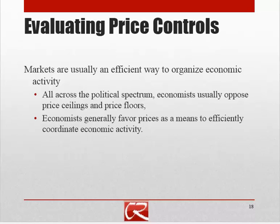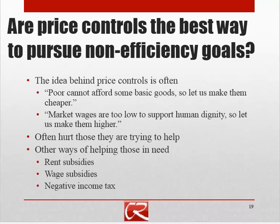Nearly every Econ 1 textbook has some big ideas or first principles in its first chapter. Paul Krugman, who often criticizes from the left, has as one of his foundational principles that markets usually lead to efficient outcomes. That said, economists are not necessarily hostile to redistribution — most say that some level of concern for the distribution of economic welfare is legitimate and important. So why are they so hostile to price controls? Because price controls are almost always the worst way to pursue an agenda for redistribution.